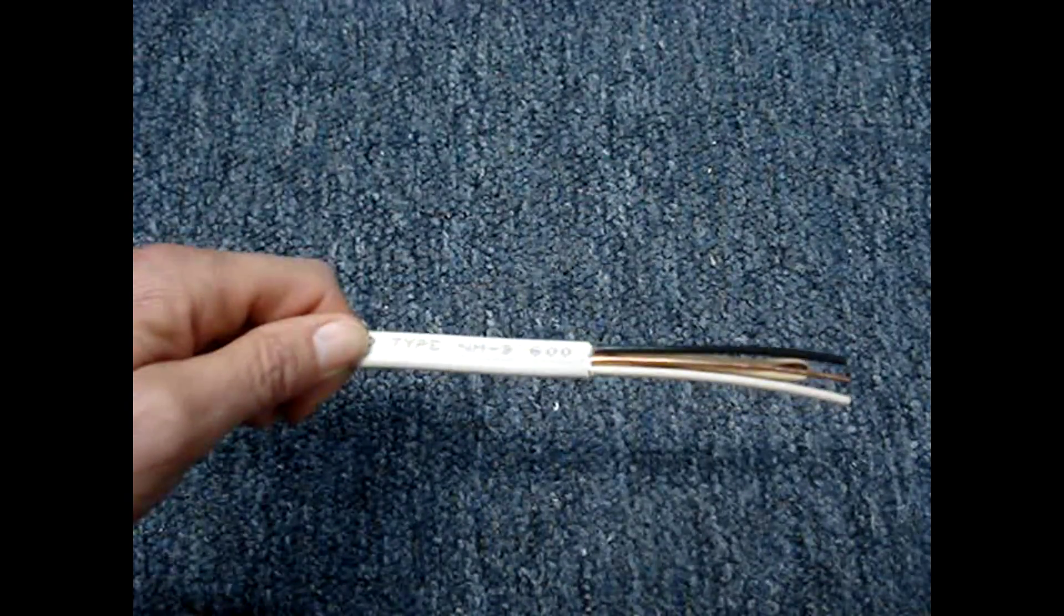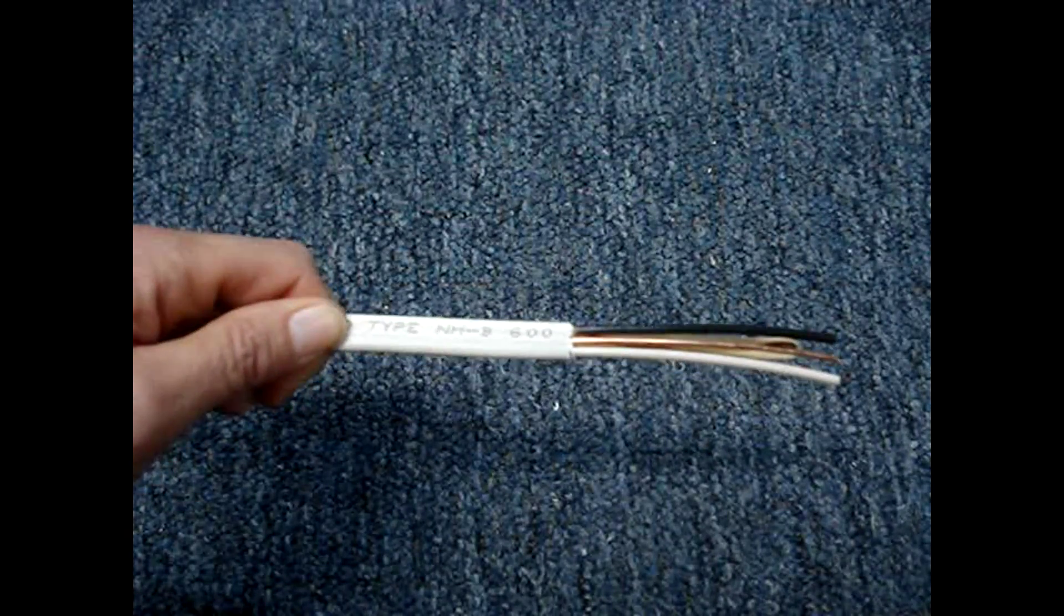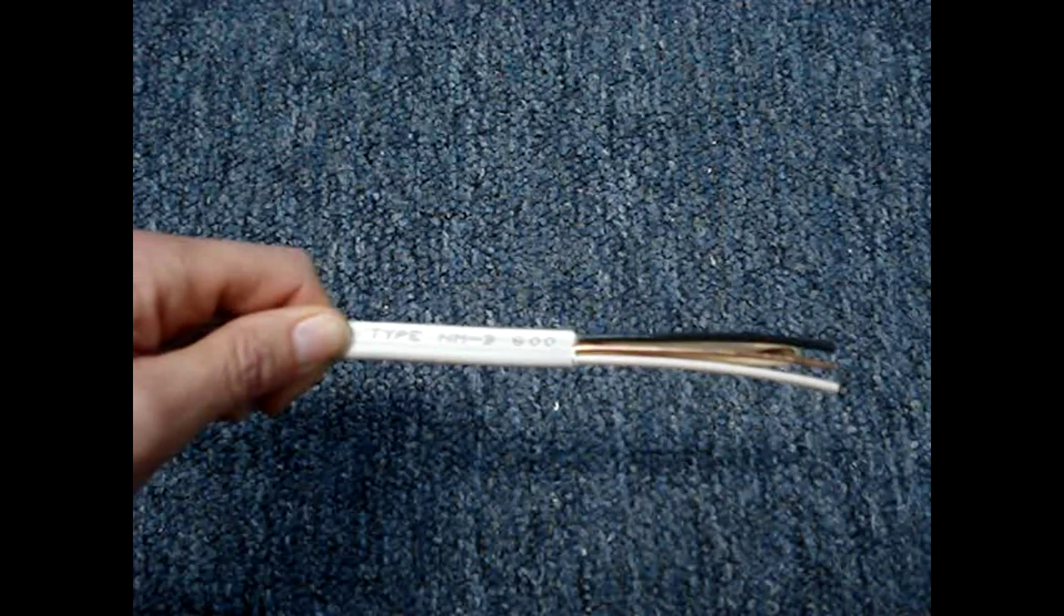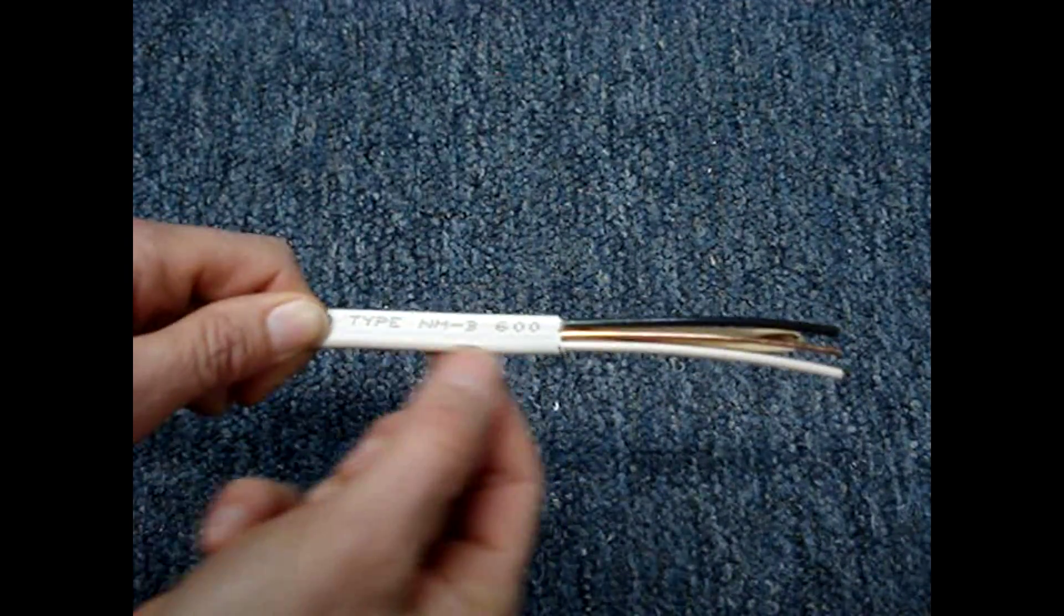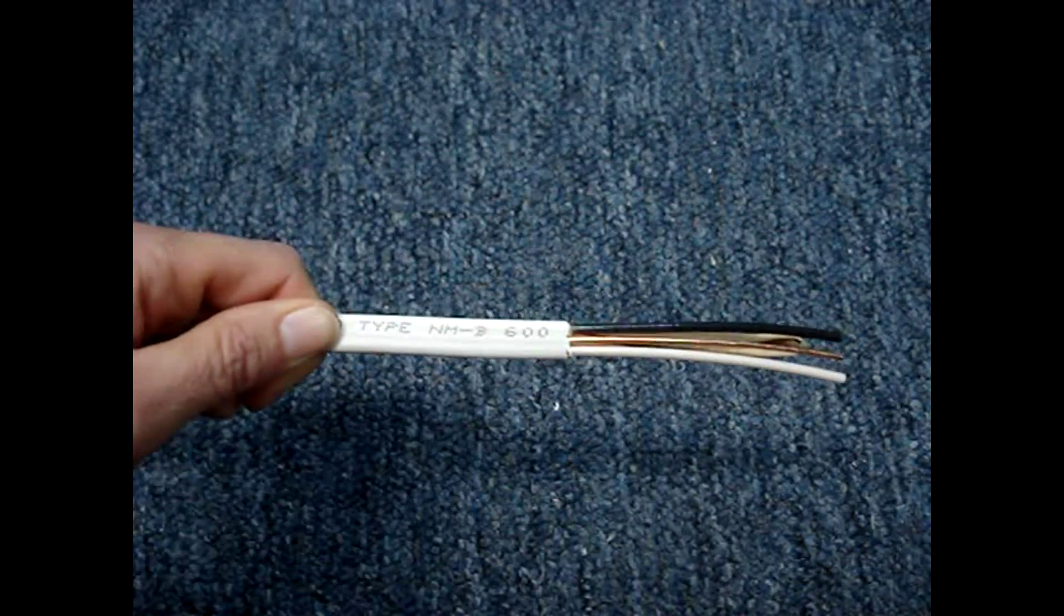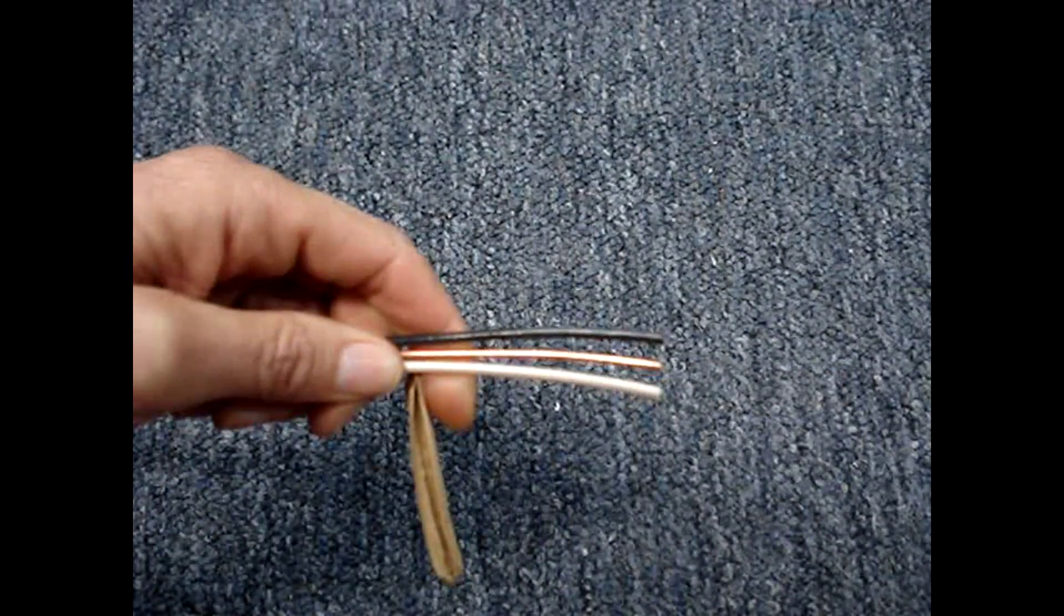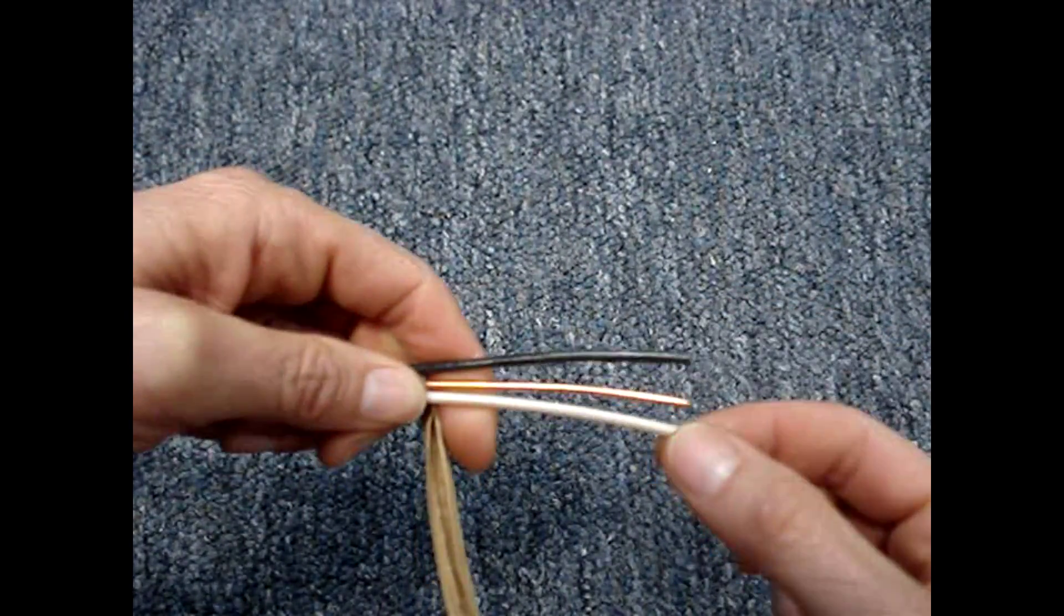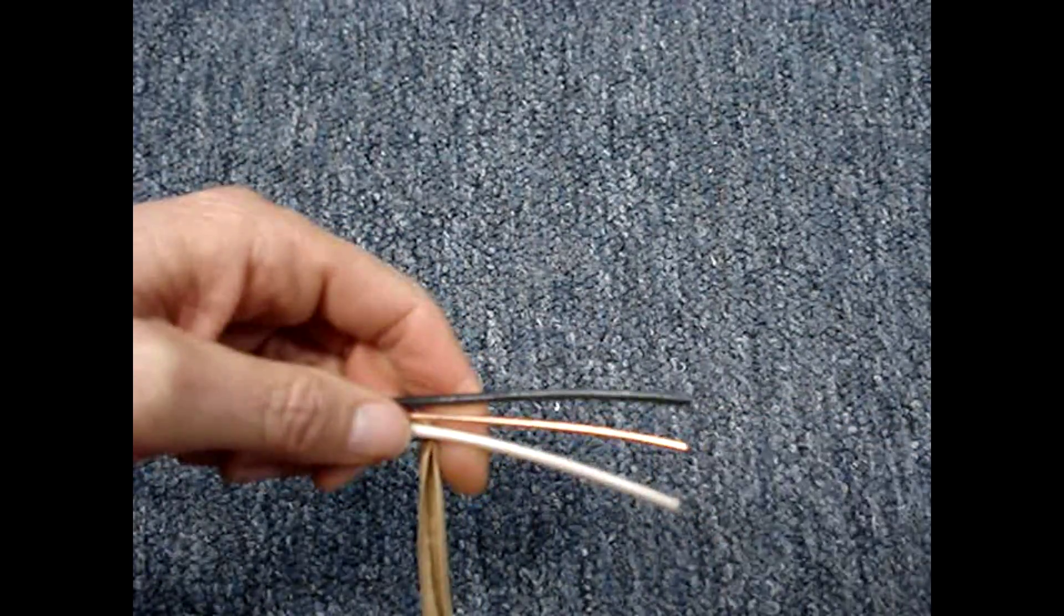The typical cabling found in a residential setting will be type NM. The NM stands for non-metallic, and it refers to the sheath. And as you can see, the sheath is plastic and not metal. It has three conductors. The black is hot, the white is neutral, and the bare copper wire is ground. Green covered wiring is also used as ground.